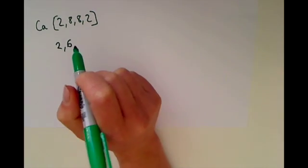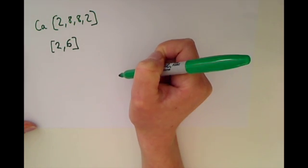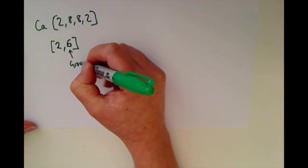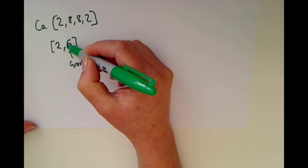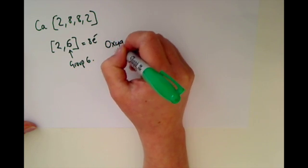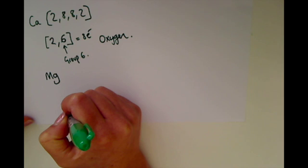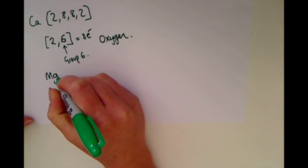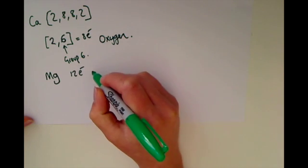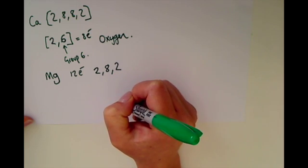Pause the video and see if you can recognize what atom would have the electron configuration 2, 6. You're looking for an atom that is in group six and has a total of two plus six, which equals eight electrons. So you should have found that that was oxygen. Now try and write the electron configuration for magnesium. If you found magnesium in the periodic table, you'll see it's got 12 electrons, so that would be two in the first shell, eight in the next shell, and two in the final shell.